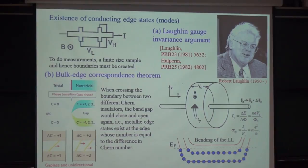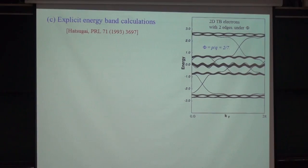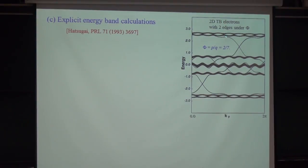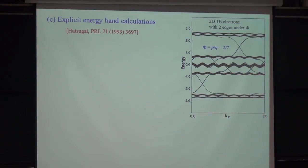This is the second argument that for a topologically non-trivial system, you are guaranteed to have metallic edge states. The third argument is brute force: you calculate a finite two-dimensional gas system and find bulk energy bands, but within the bulk energy band gap, you see edge states. From all three angles we see that the quantum Hall system is amazing — we have an insulating topologically non-trivial phase, but the edge is metallic.